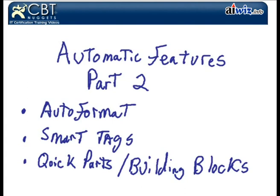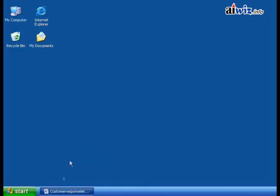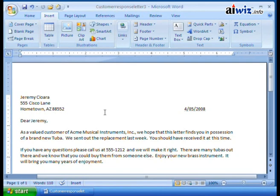Some really nifty features that we'll take a look at, including Auto Format — just a warning, it's changed a little bit from the Word 2003 environment, but it's still a very nifty feature. Smart Tags let us take data recognized by Word and perform an action on it. And then Quick Parts and Building Blocks — not so much automatic features, but once you get them in place, they will automatically help you streamline your process.